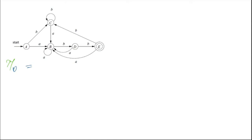By looking at this, we can distinguish between the final states and non-final states very easily, right? So what we do? We put all the non-final states together like A, B, C, and D. And we have a final state that is E.